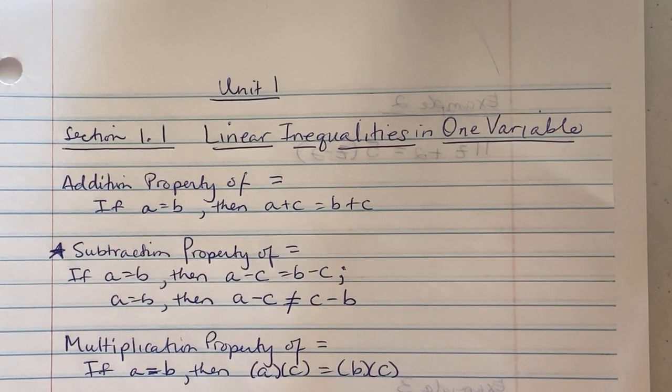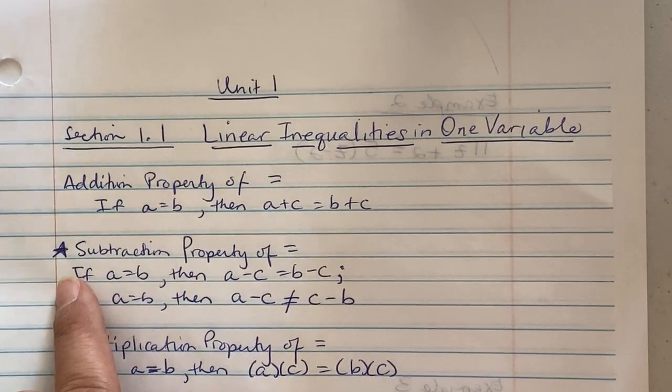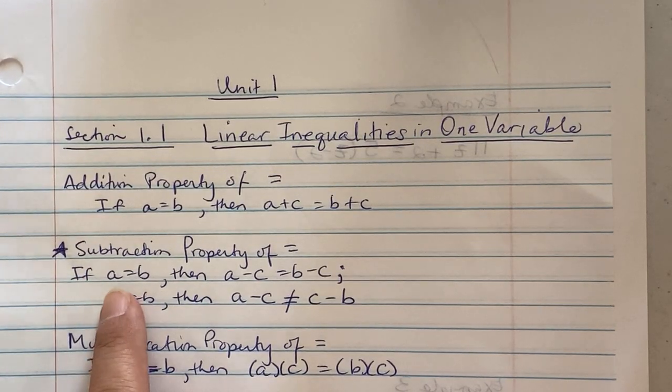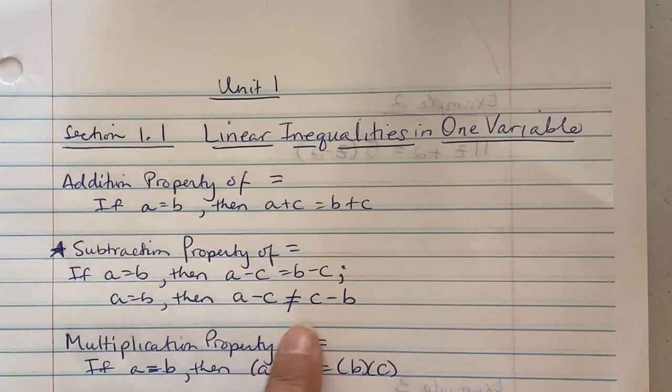Subtraction property is starred because yes, if you do a equal to b, then a minus c equals b minus c. But you cannot do the reverse of it. If I do a minus c, I cannot be c minus b. The left side and the right side will not be equivalent.